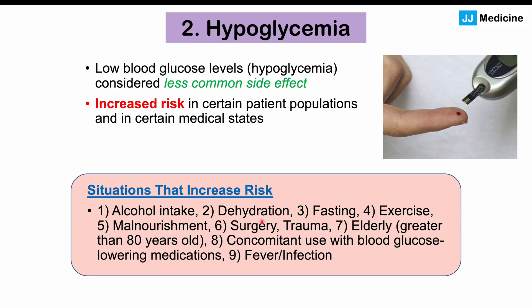Additional risk factors for hypoglycemia include patients who are dehydrated, those who are fasting or not eating or drinking, patients who are exercising — especially excessive exercise — patients who are malnourished, those who have undergone surgery or experienced trauma, and the elderly. Anybody greater than 80 years of age is at a higher risk of having hypoglycemia.